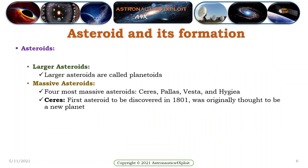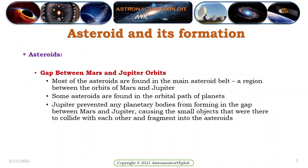Larger asteroids are referred to as planetoids. The four most massive asteroids are Ceres, Pallas, Vesta, and Hygiea. The first asteroid to be discovered, in 1801, was Ceres, and it was originally thought to be a new planet. Most asteroids are found in the main asteroid belt, a region between the orbits of Mars and Jupiter. Some asteroids are found in the orbital path of planets. Jupiter prevented any planetary bodies from forming in the gap between Mars and Jupiter, causing small objects there to collide and fragment into asteroids.